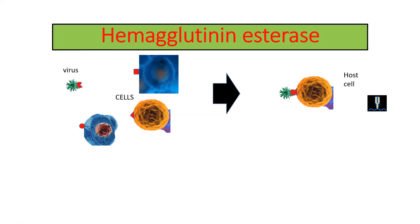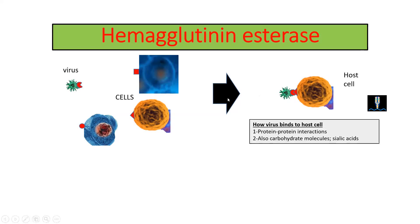But receptors are not the only thing that mediates virus binding to the host cells. The cell which the virus binds to is called the host cell, and virus binding can be mediated not only by protein-protein interaction with receptors, but also by carbohydrate molecules. Sialic acids are especially important — they are also determinants for the virus's choice of specific cells.